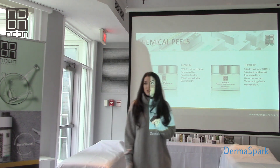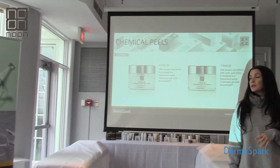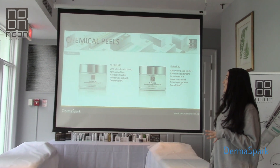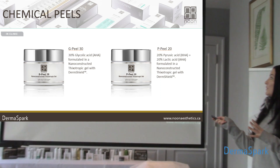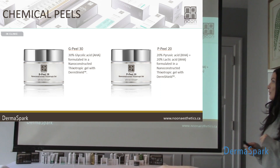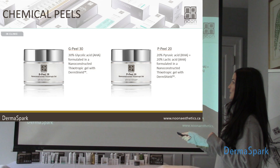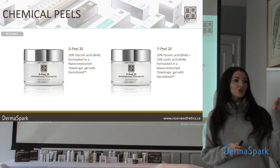Let's dive into our in-clinic portion. We're going to start off with our chemical peels. Here in Canada you have two beautiful offerings for chemical peels. The first one is the GPL30, and what I want to point out is what's underneath it — it says nanoconstructed thixotropic gel.